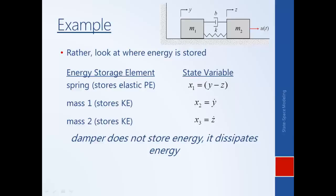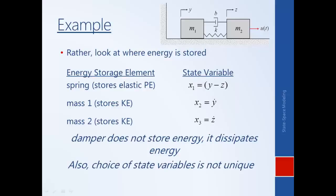So here we've shown how to find the minimum number of state variables for a system in an intuitive way, and we get a sense of this notion of a dynamic system state. It's also worth pointing out that the choice of state variables is not unique. Previously we had chosen y, z, y-dot, and z-dot. If we know y and z separately we have just as much information as knowing their difference, so that set of four also captured the state — it just wasn't minimum.